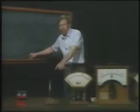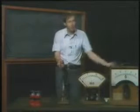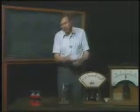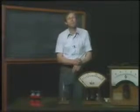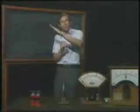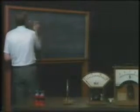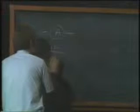Suppose this instrument gives full-scale deflection with one milliamp, and the electrical resistance of the coil is one ohm. That means a full-scale deflection occurs with one milliamp passing through it. When we write the symbol A in a circuit, we mean a device with a resistance of one ohm that gives full-scale deflection with one milliamp.